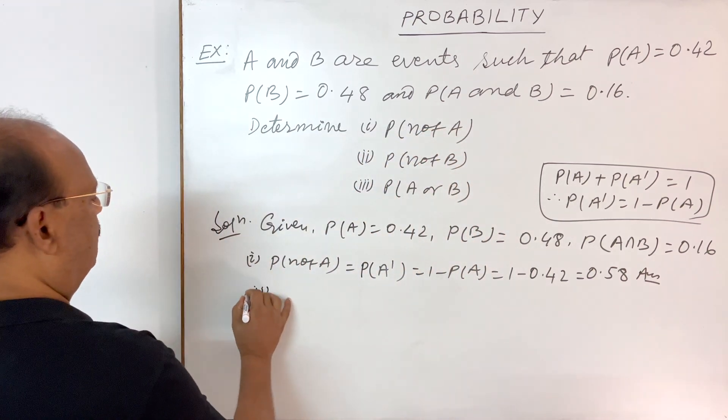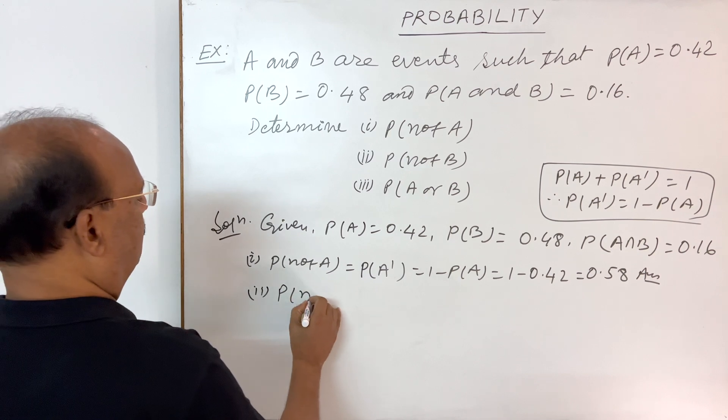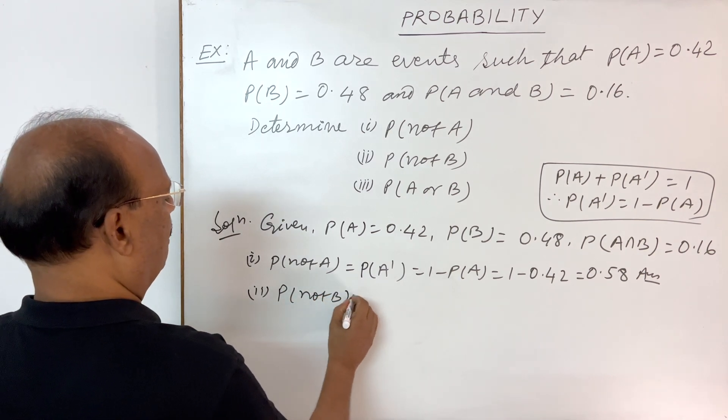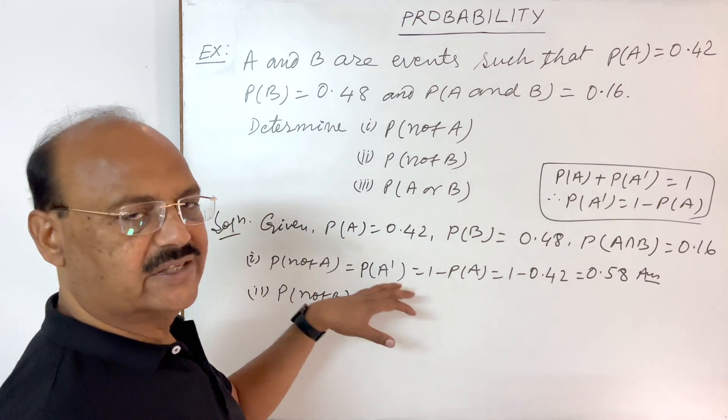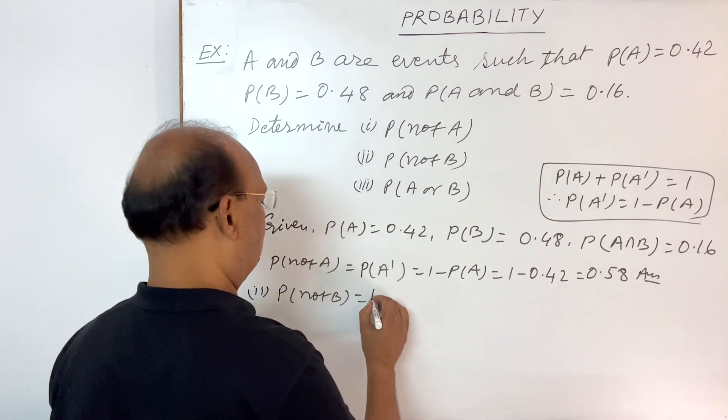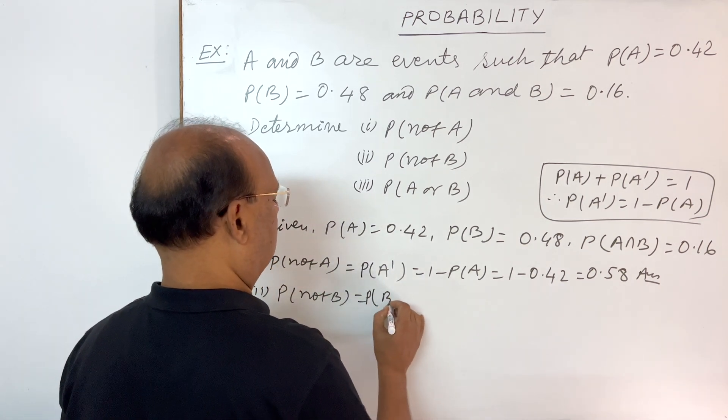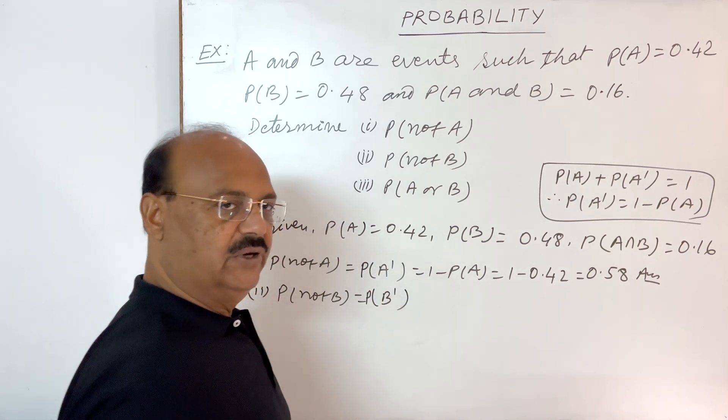Now second part of this question, we have to find out probability of not B. We can do it in exactly similar way. So this will be probability of not B, means B complement, B dash.